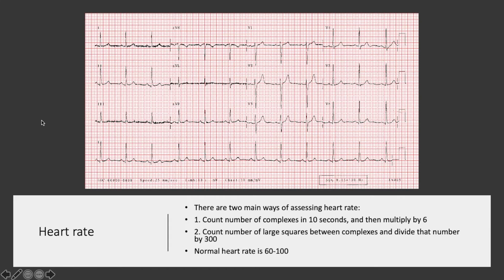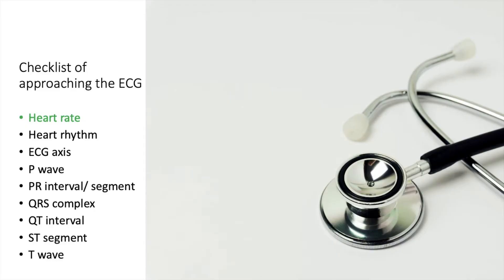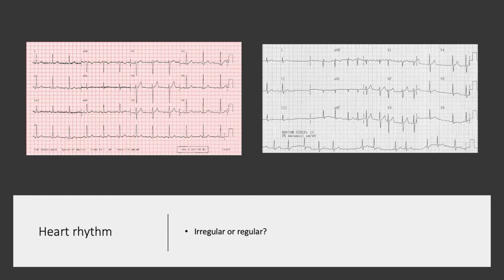That's how you calculate the heart rate, which is the first thing you should do when reading an ECG. The next thing is to look at the heart rhythm — is it a regular or an irregular heart rhythm? Looking at this example, the gap between each QRS complex is pretty much the same, which means this is a regular heart rhythm.